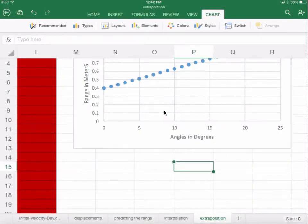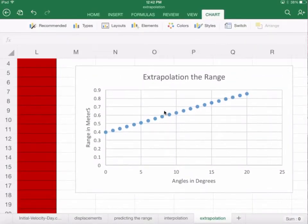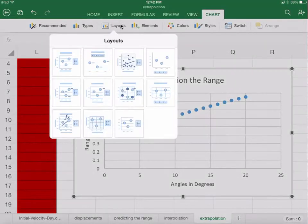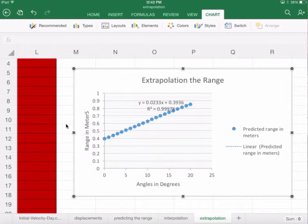Now that we have extrapolation, what we want to do is produce an equation of a line. The way we're going to do that is go up and select layouts and then select f sub x. That means it's going to be a function.